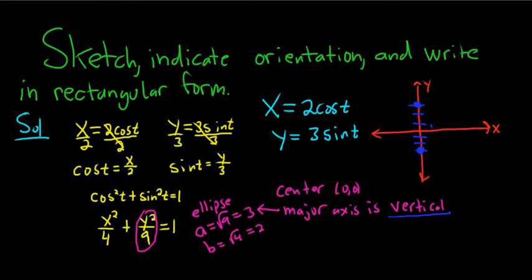And then left and right by 2. So 1, 2, put a dot. 1, 2, put a dot. Again, if the bigger number was under the x, like if there was a 9 here instead of a 4, then we would go left and right by 3. That's key.